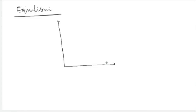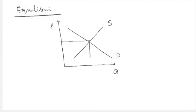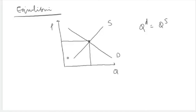Now that we have discussed the demand and supply curve, it is time to bring both curves on the same graph and understand where exactly the economy wants to settle. There are so many points on the demand curve and on the supply curve that are possible, but the point where the economy settles is the equilibrium point. Equilibrium is the point at which the quantity demanded equals quantity supplied — where the demand curve and the supply curve intersect each other.